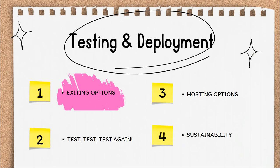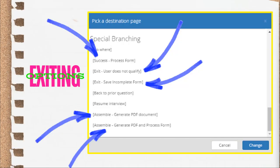In this first video, we'll cover the last 5% of your interview development time. I'll walk you through the exiting options, explain how you select one and attach it to a button, and then we'll talk about why you'd select one exiting option over another. There are 5 exiting options to move your end user out of an A to J guided interview.